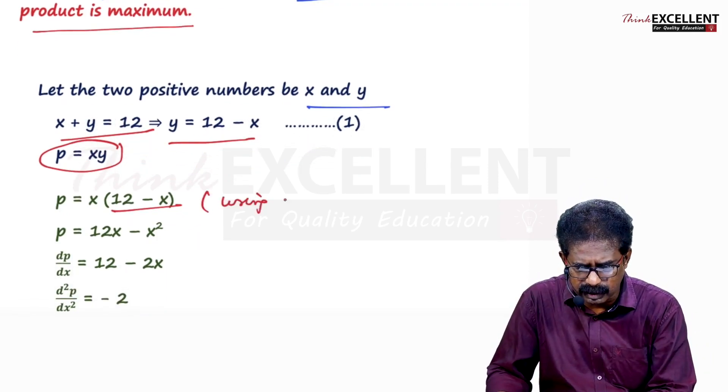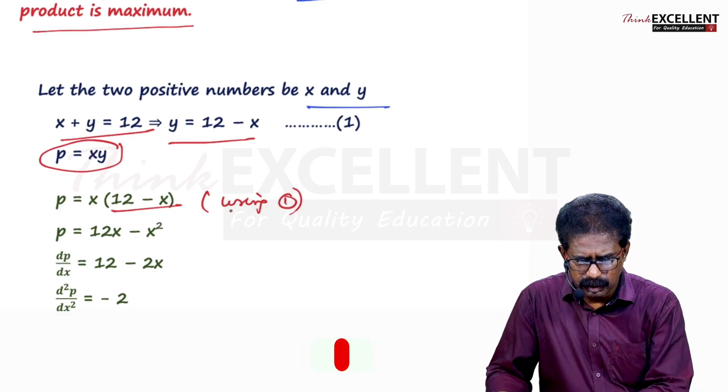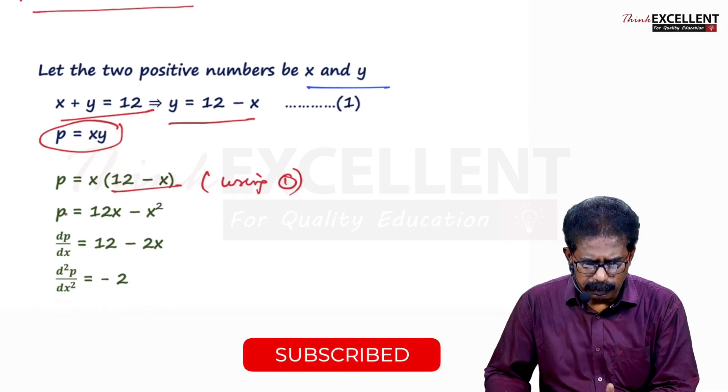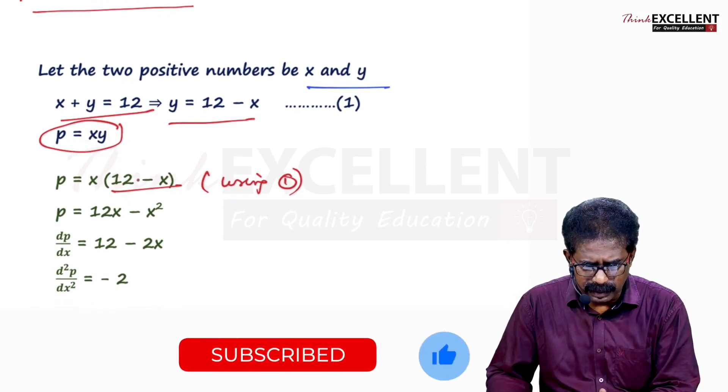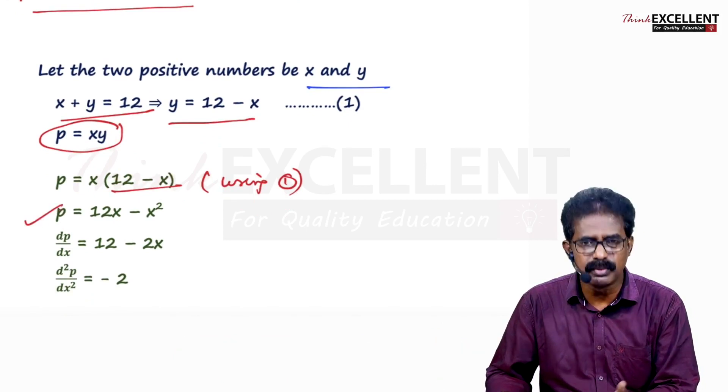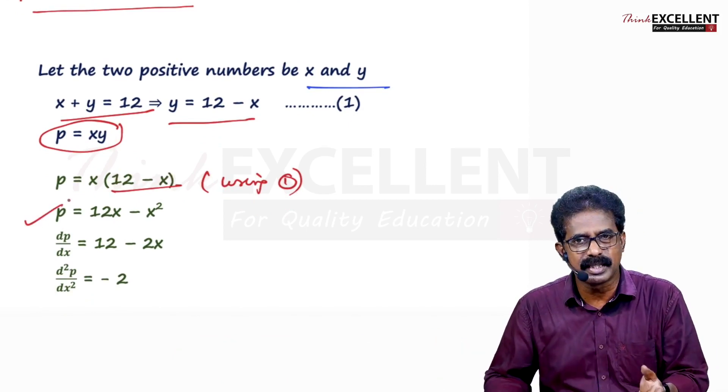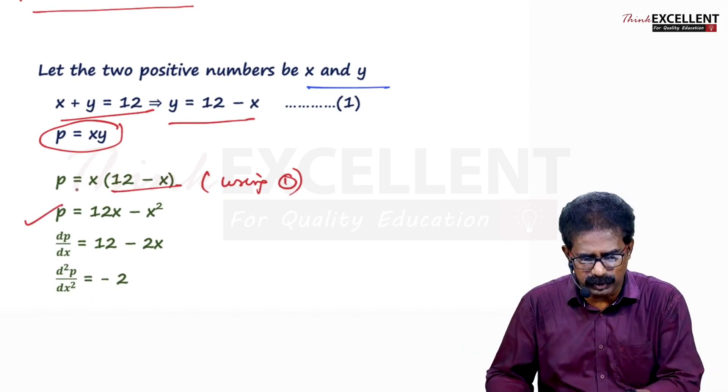Using equation 1. Now you are getting the equation. So P equal to 12X minus X square. That's all. Now usual method you know. You find P dash X, P double dash X. Differentiate 2 times.